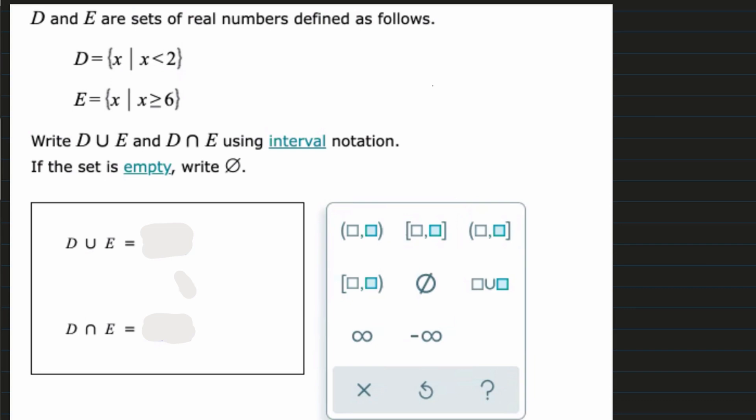For this problem, we have D and E are sets of real numbers, and they're defined as follows. We need to write the union and the upside down using interval notation.